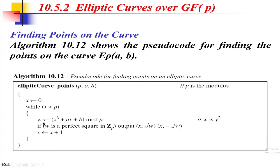If w is a perfect square in Z_p, the output will be the points (x, √w) and (x, −√w). These are the two points — the first is the elliptic curve point and the second is its additive inverse. Since y² = x³ + ax + b, we get y = √w. The x values range from 0 to p−1, and the loop continues until x exceeds p.